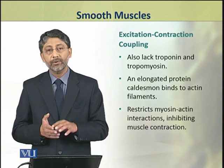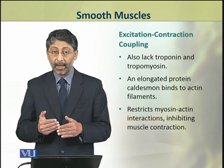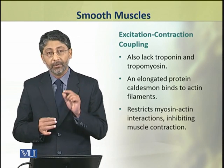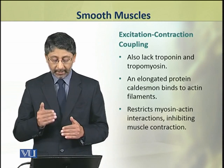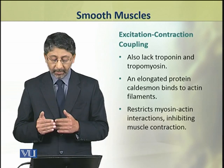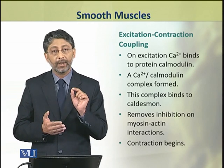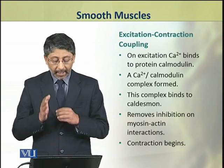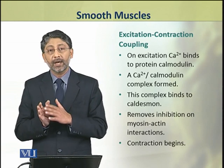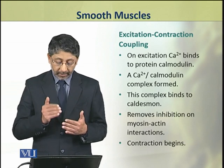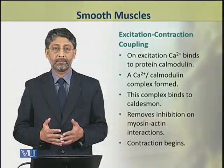Smooth muscle cells also lack troponin and tropomyosin. The actin binding is instead performed by an elongated protein called caldesmone, which inhibits muscle contraction. When excitation-contraction coupling happens, calcium ions bind to a protein called calmodulin, forming a calcium-calmodulin complex. As a result, it removes the inhibition on actin-myosin interactions and contraction begins.